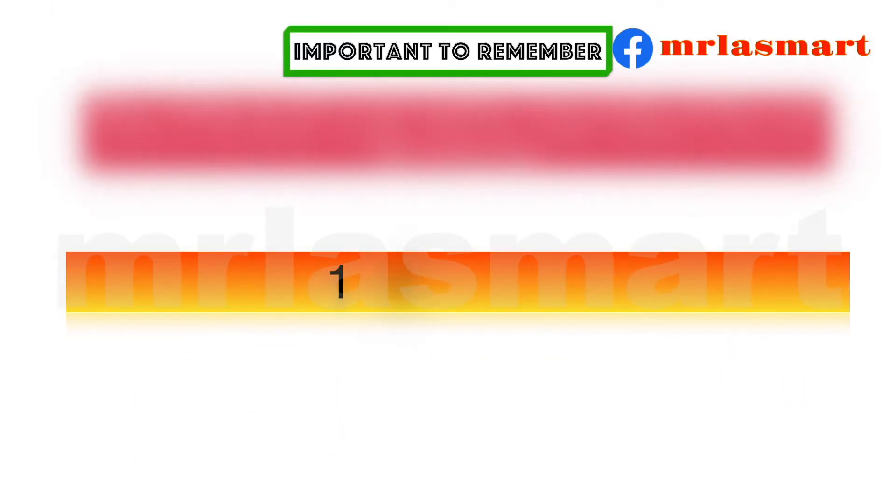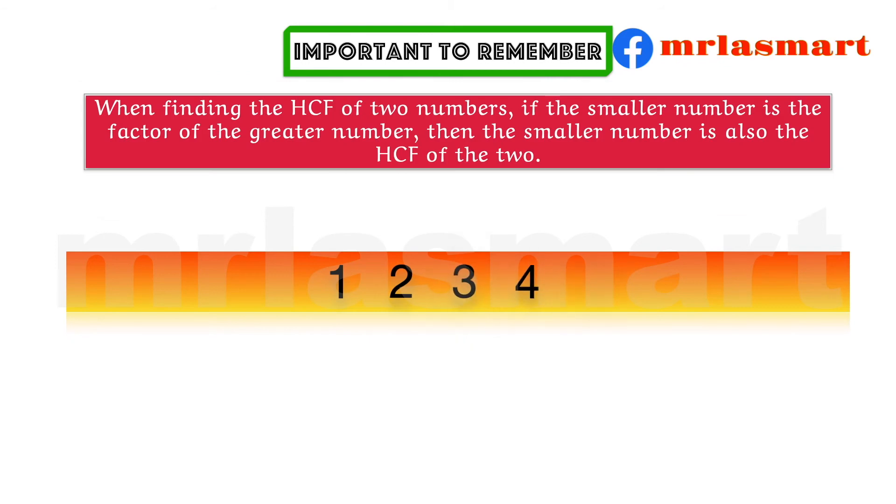Important to remember: When finding the HCF of two numbers, if the smaller number is a factor of the greater number, then the smaller number is also the HCF of the two.